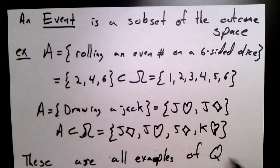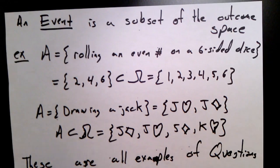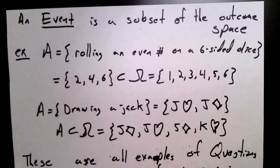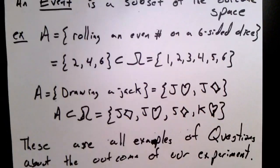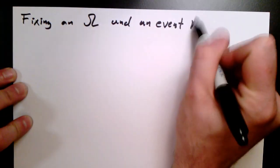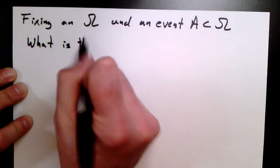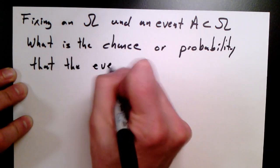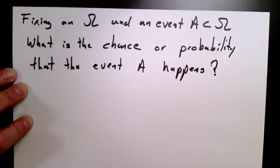Now, it's all good to have these events, these examples of questions that we could ask about possible outcomes of our random experiment. But what we're really interested in is having some idea of the probability or the chance that a certain event happens. So, let's make that a little bit more formal. So, we're going to fix an outcome space omega and some event A. And we're going to ask, what is the chance or probability of that event A happening?